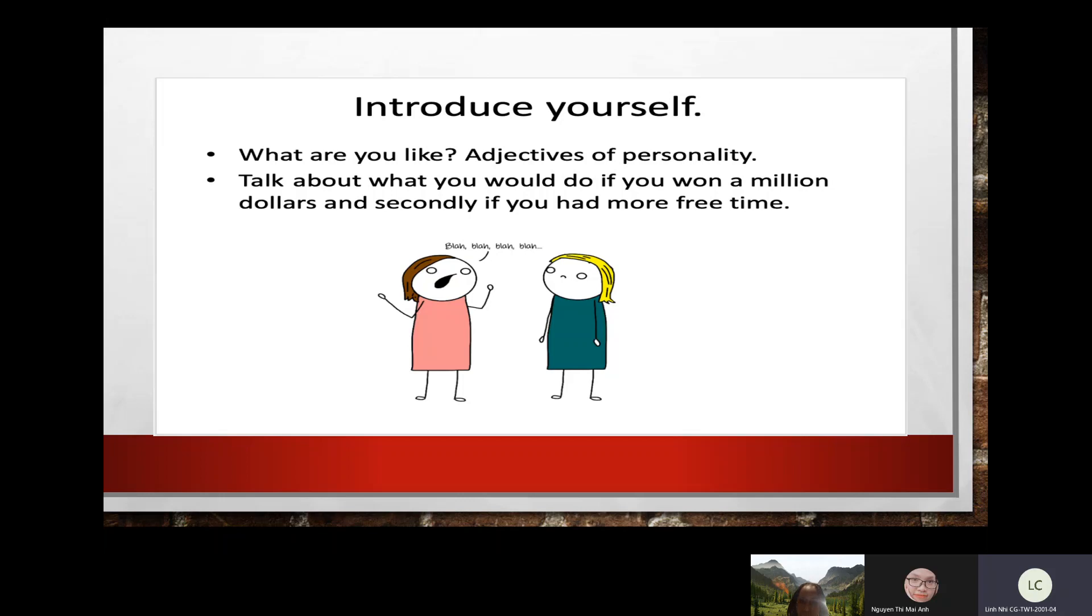What are you going to do if you won a million dollars? If I won a million dollars, I would give half to my parents and half to hang out with my friends. Good, good, good. And secondly, what would you do if you have more free time? If I had more free time, I would do anything I want. I would do exercise, I would listen to music, watch TV.